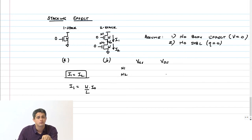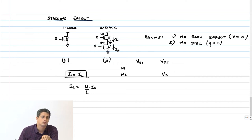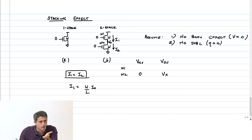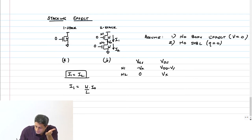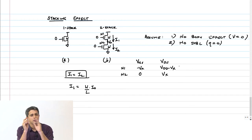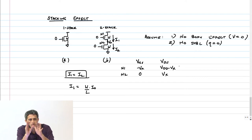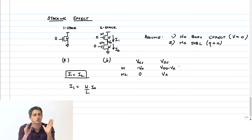What is V_GS of N1? It is minus V_X. What is V_DS of N1? It is VDD minus V_X. Now, will V_X be close to ground or close to VDD? Since I1 must equal I2, the V_GS and V_DS must adjust so both currents are the same.